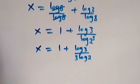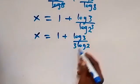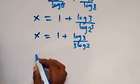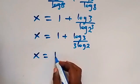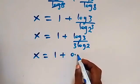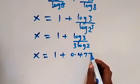We can substitute the value of log 3 and log 2 here. So this will be x equals 1 plus log 3, which is 0.4771.